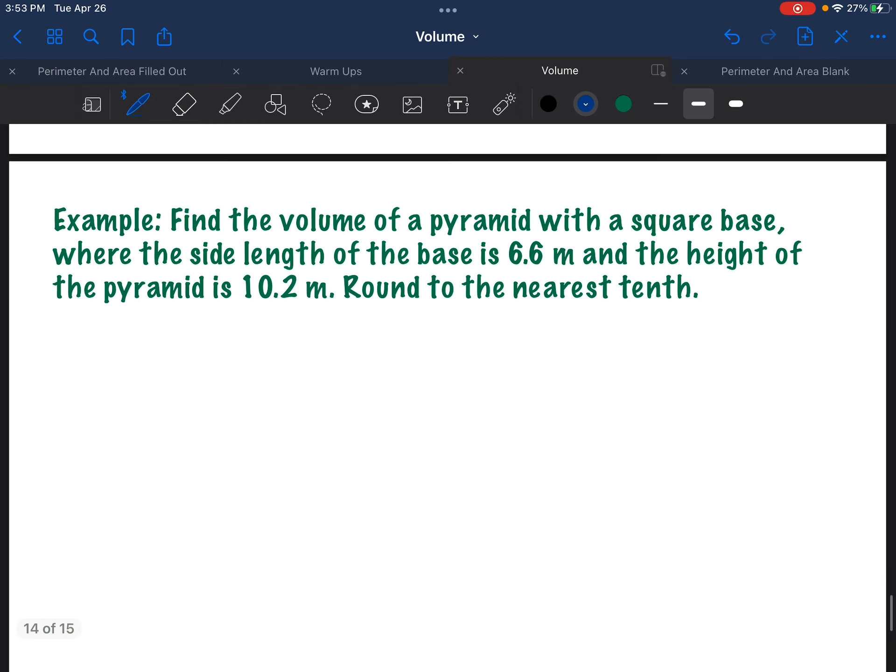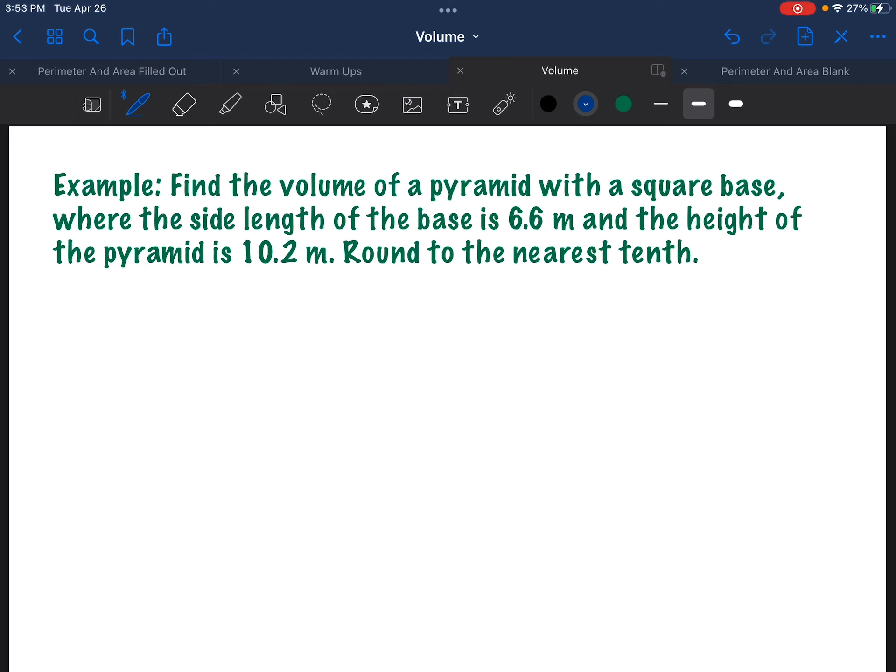Let's do a couple examples. So example one, find the volume of a pyramid with a square base where the side length of the base is 6.6 meters and the height of the pyramid is 10.2. I'm going to try to draw this for you. So if you ever want to practice drawing a pyramid, I recommend you draw like an L, a right angle, and then make the other two sides dotted because they're going to be as if they're in the background. Now pick a point up top and draw a straight line down to the front corner, to the other two corners. And then the back corner is going to be a dotted line all the way down. And that's how I've created that three-dimensional pyramid-looking shape.